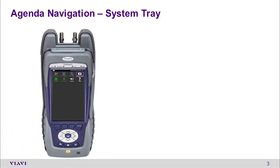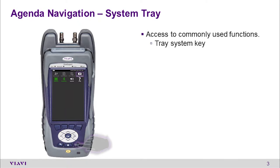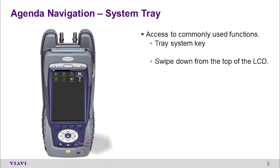The tray menu allows access to commonly used functions, and it can be accessed either by pressing the Assistant's Tray key or swiping downward from the top of the LCD screen.